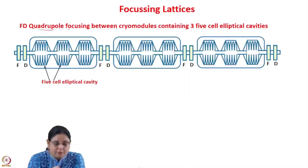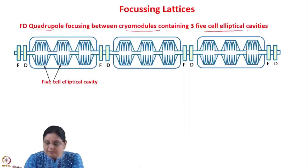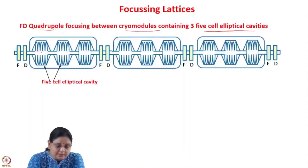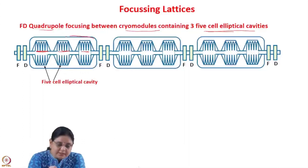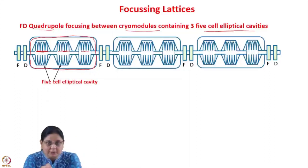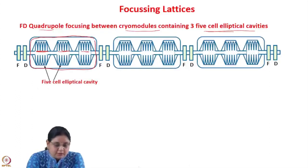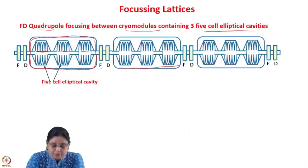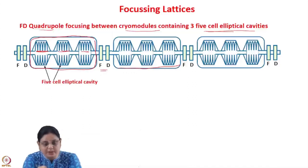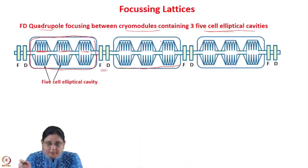An FT type of quadrupole focusing is generally used between cryomodules containing five-cell or multi-cell elliptical cavities. Here, for example, there are three groups of five-cell elliptical cavities inside a cryostat — these are superconducting cavities used for acceleration. In between two cryostats, we have warm quadrupoles or normal-conducting quadrupoles that are used for focusing, arranged in an FT type of manner. This type of lattice can be used for focusing in between cryomodules containing multi-cell cavities.